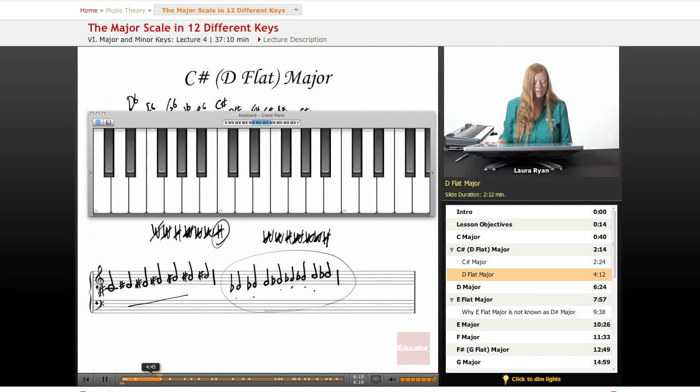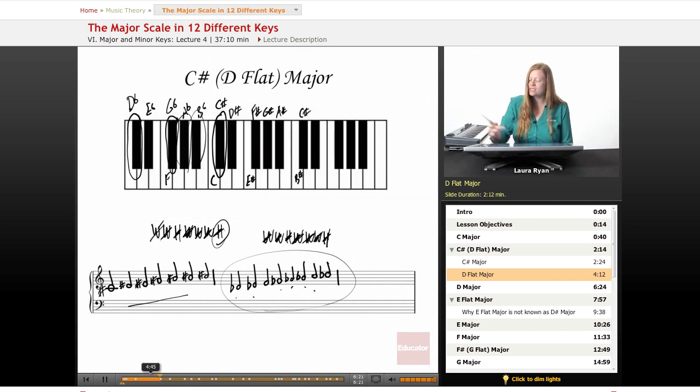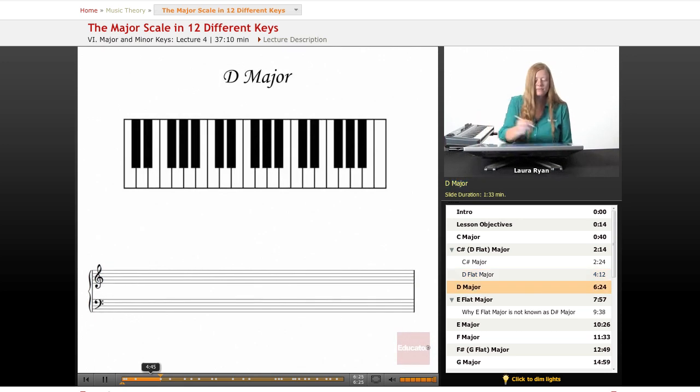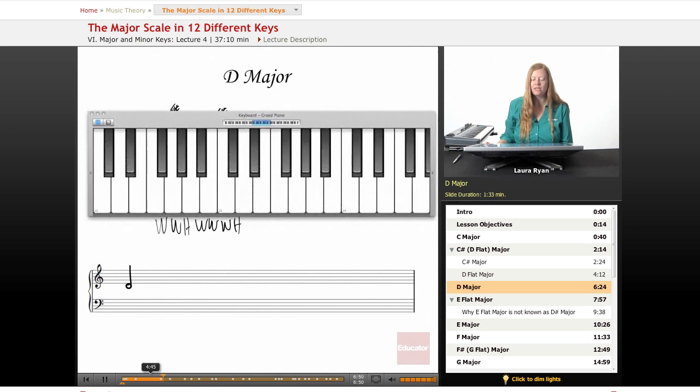Let's move on and continue with D. Here's our D and I'm going to go ahead and label the notes that we need for D. Let's use our pattern: whole, whole, half, whole, whole, whole, half. This time I'm going to play it while we write it out. Let's start on our D.